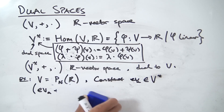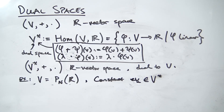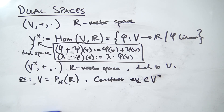So dual spaces are really just about linear maps: you can add them, scale multiply them, and they satisfy all the vector space axioms. That's pretty much all for this video. The motivation behind dual spaces isn't entirely clear yet, but it will make more sense in the next video where we discuss bases on dual spaces, which will be quite interesting. Hope you guys enjoyed this video — see you in the next one!